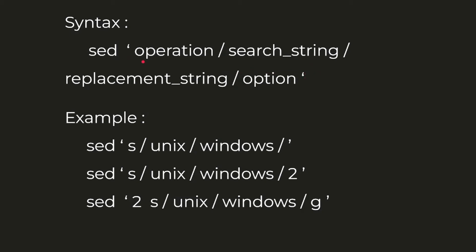The syntax of sed is: sed, then inside single quotes we specify the operation, the search string — the string to be found — and the replacement string — the string that will replace the search string — and finally the option. In the first example, the operation is 's' for substitution. The search string is 'unix' and the replacement is 'windows'. With no option specified, this command searches the entire file for 'unix' and replaces the first occurrence in each line with 'windows'.